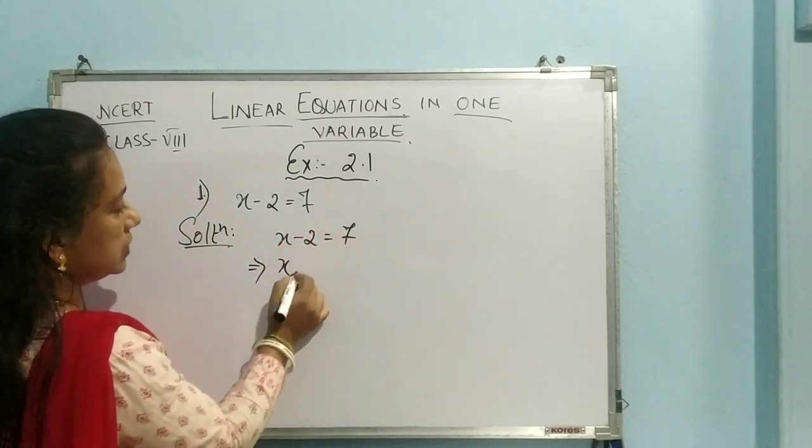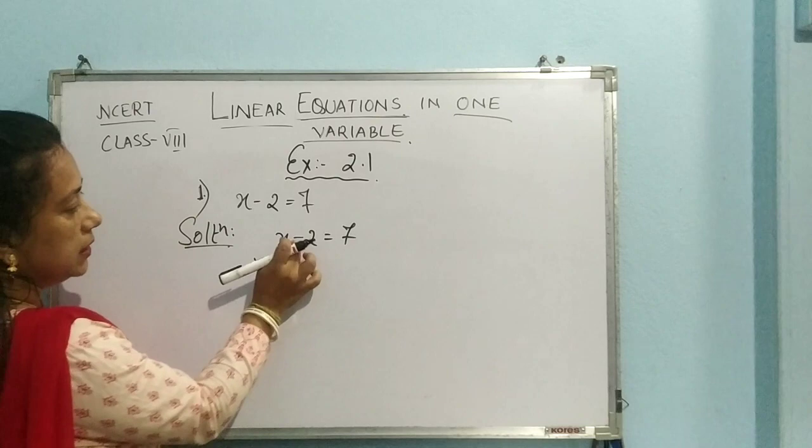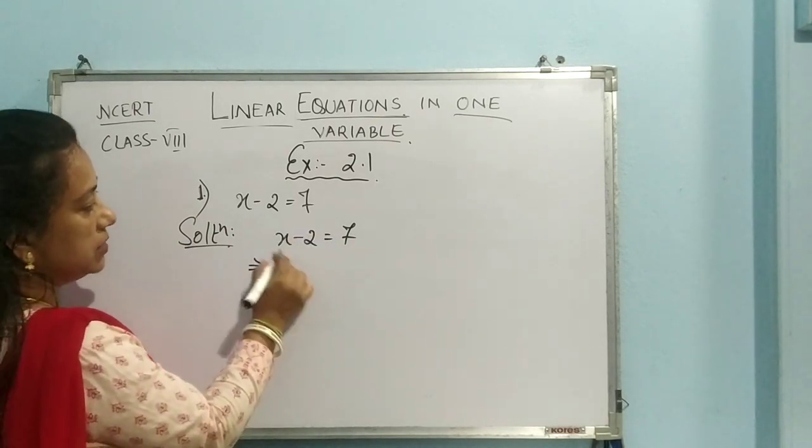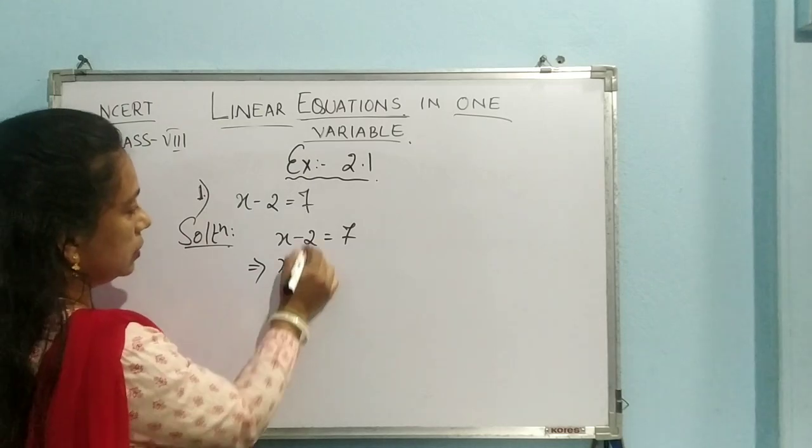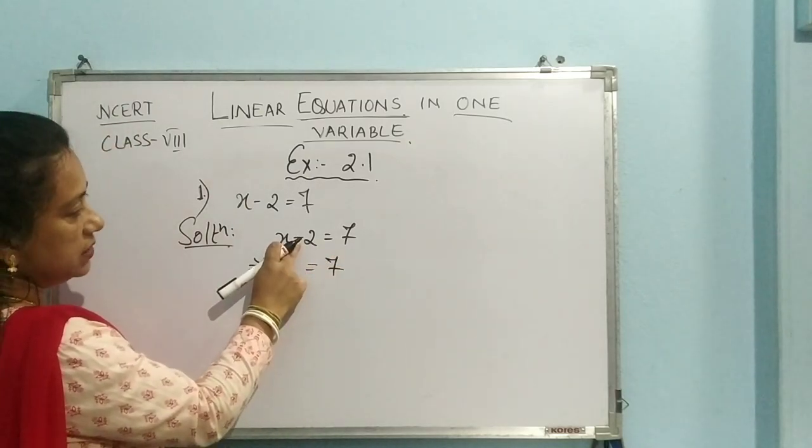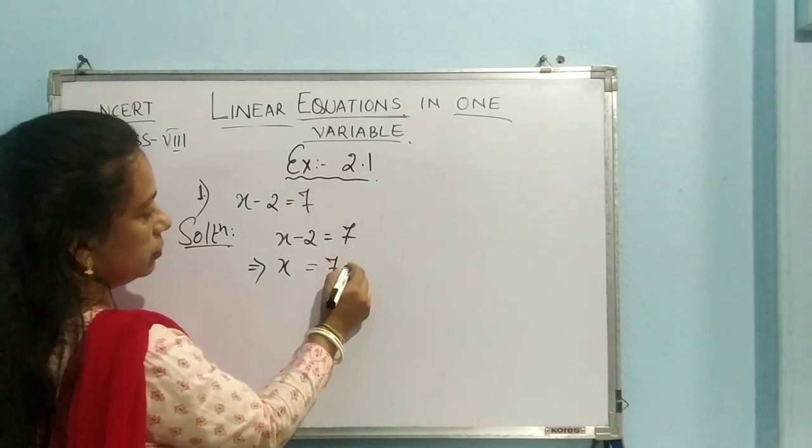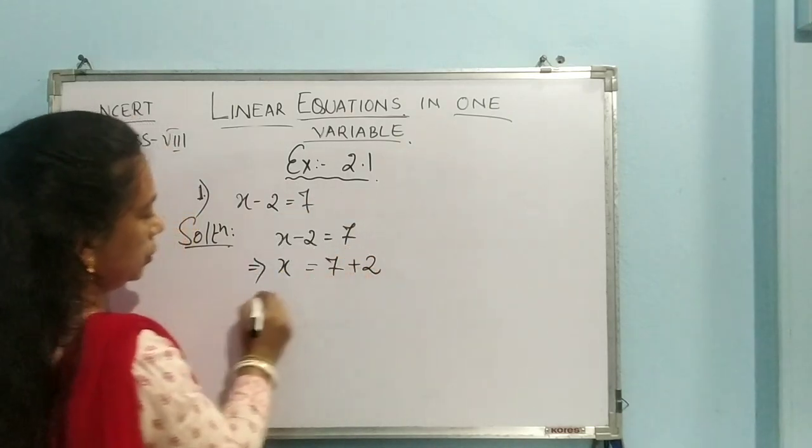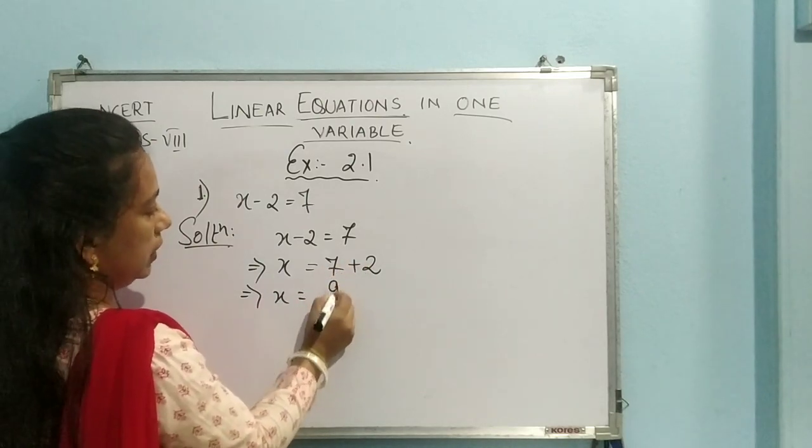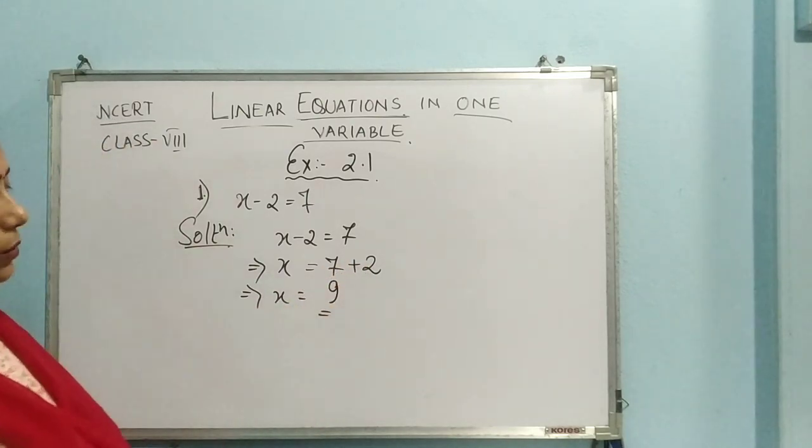So x minus 2 equal to 7. Since we need the value of x, whatever constant is there other than x, we will be shifting it to the other side. So x equal to 7, since it is minus 2 in the left hand side, if it goes to right hand side, it will become plus 2. So x is equal to 7 plus 2, 9. Very simple.